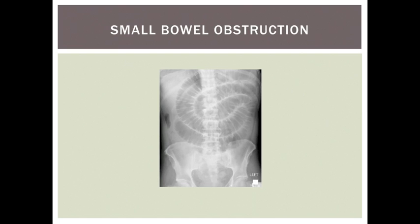This x-ray shows small bowel obstruction. The valvulae extend the whole way across the bowel, confirming that this is dilated small bowel, and there is no large bowel visible, which confirms this is small bowel obstruction. Large bowel obstruction can also give dilated small bowel in the presence of an incompetent ileocaecal valve that allows reflux of air backwards from the caecum into the small bowel. Large bowel obstruction without small bowel dilatation is at higher risk of perforation, as it suggests a competent ileocaecal valve and therefore a closed loop with constantly increasing pressure.